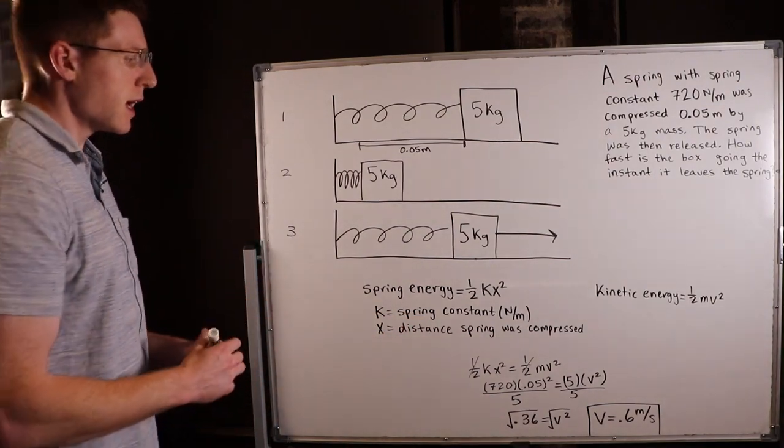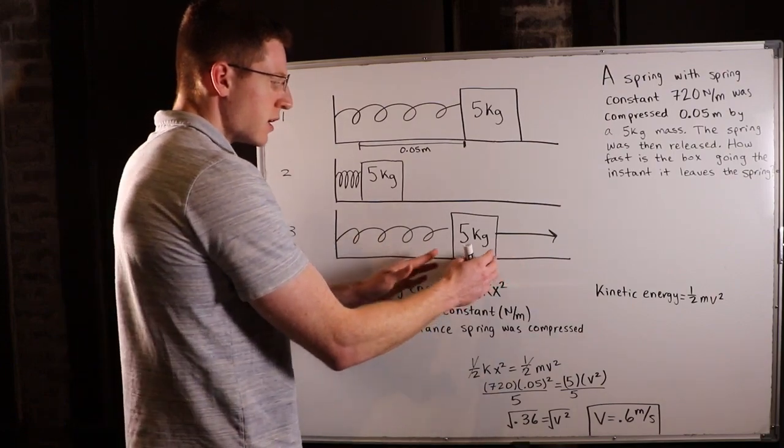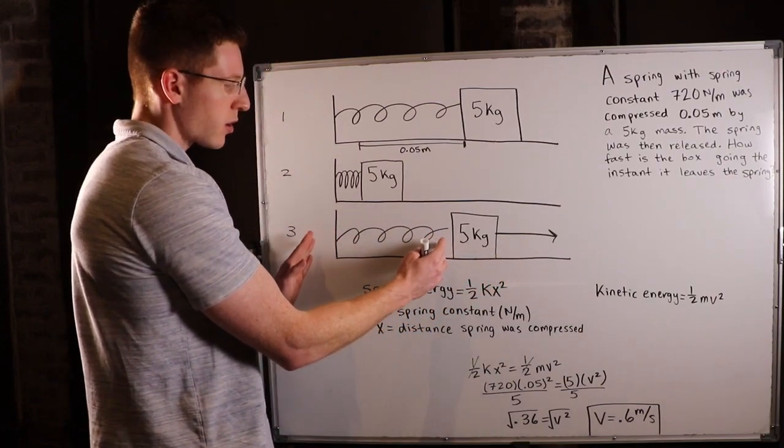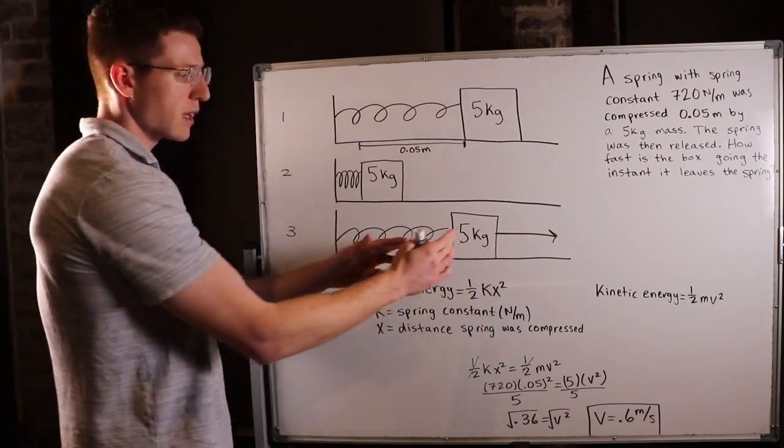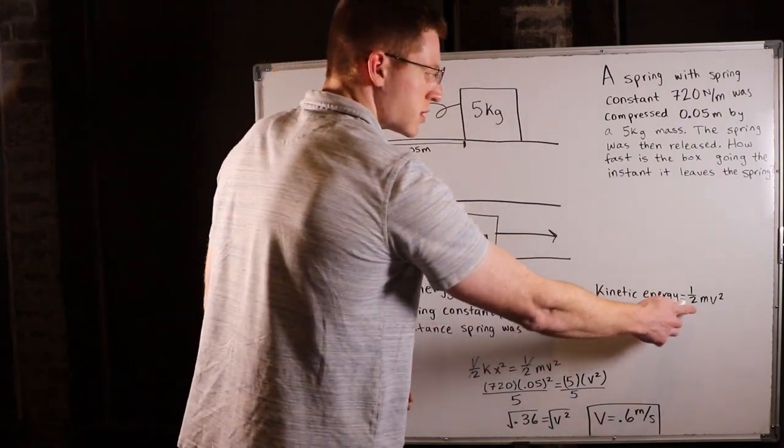And then once the spring has been released, the spring has lost all of its charged up energy and it's all been converted into motion energy or kinetic energy. And we know that's represented by one half mv squared.